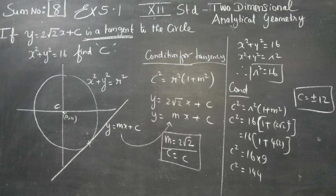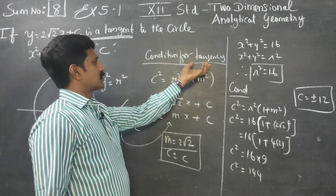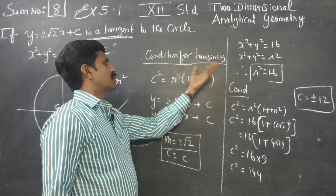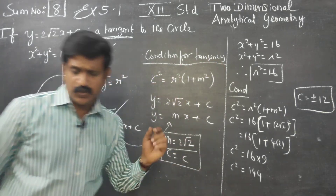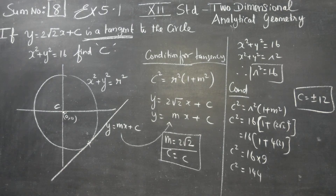The condition is c square is equal to r square into 1 plus m square. Therefore c square is equal to 16 into 1 plus m square. The value comes out to 144, and this is the value of c. From this problem you are learning a new condition called tangency of a circle — line tangent — c square is equal to r square into 1 plus m square.